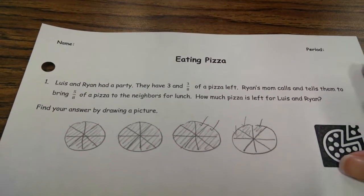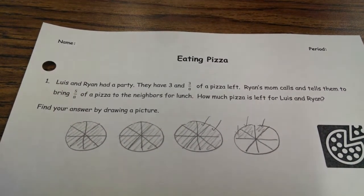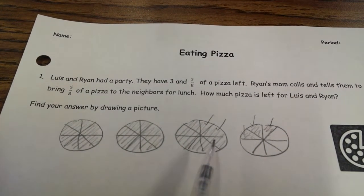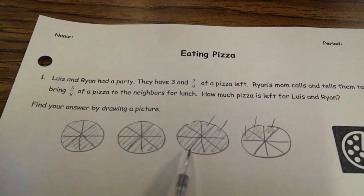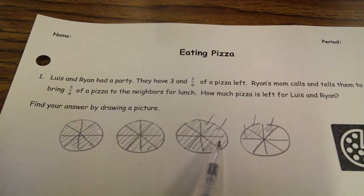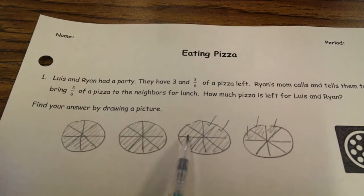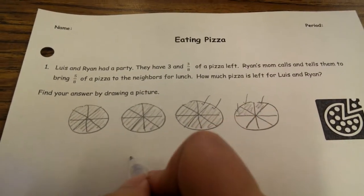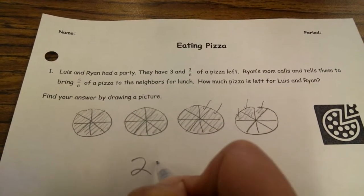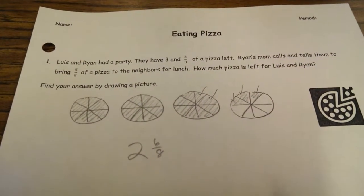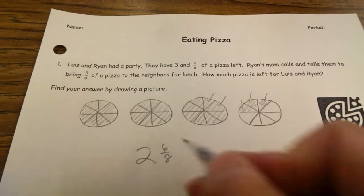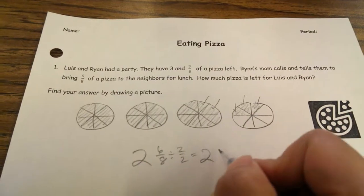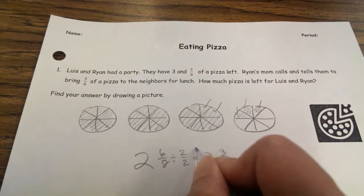So what are Lewis and Ryan left with? Well, they're still left with 2 wholes, but now they're missing 2 pieces here. So now they only have 1, 2, 3, 4, 5, 6 out of 8. So what's left is 2 and 6 eighths of a pizza for Lewis and Ryan. And we can simplify that — divide by 2 over 2 — and we get 2 and 3 fourths.